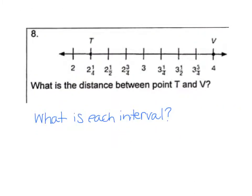For number 8, it says, what is the distance between point T and point V? So you need to know exactly how far apart these are. Here's your two whole numbers, 2 and 3. And in between them, they've got 1, 2, 3, 4 sections. So that means each line is representing 1 fourth.